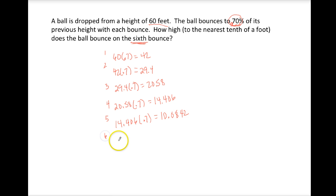And then on the sixth bounce, this is the one we wanted. We take that last bounce and multiply by .7, and we get 7.05894.